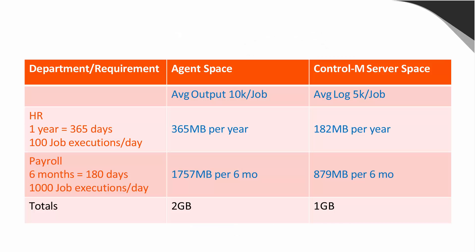While we're talking about the sizes, let's take a look at some examples. If you consider that each of your executions per department, they can be pretty large. We've got HR — they want to keep their jobs for a year, and they have 100 executions a day. At an average of 10 kilobytes per job on your agent, you're looking at 365 megabytes per year that would need to be stored on an agent. For your Control-M server, your database would have to store 182 megabytes per year as an average.